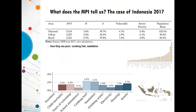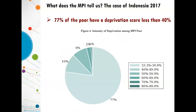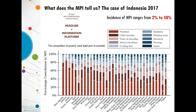For every country, we have the national MPI incidence and intensity in the country briefings, the composition of poverty by indicator, and the level of poverty. We also look at how deprivation scores are distributed. In the case of Indonesia, 77% of the poor have less than 40% of deprivations. We can also look at the composition of poverty at a disaggregated level — Papua, the poorest region, is on the right, and Riau Islands, the least poor, on the left — and you can see the composition of poverty varies greatly even between subnational regions with similar levels of poverty.